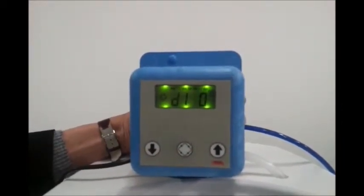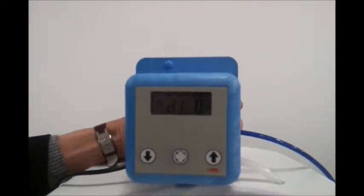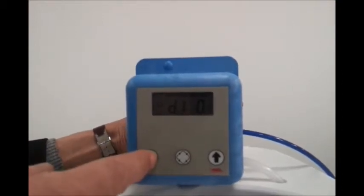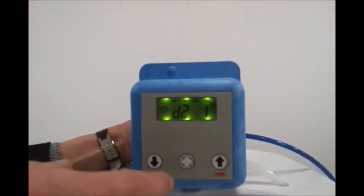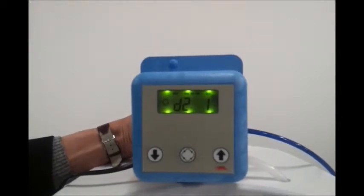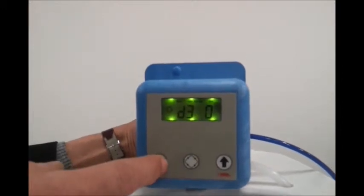How to set the regeneration days? D1 semicolon 0 is displayed, where 1 indicates the day of the week. 1 is Monday, 2 is Tuesday and so on until 7, that is Sunday. 0 indicates no regeneration and 1 stands for regeneration. Now, let's see how to program 2 regenerations in a week. For instance, Tuesday and Saturday.